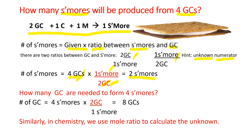How many graham crackers are needed to form four s'mores? The unknown is graham crackers, the given is four s'mores, times the conversion factor — unknown on numerator, given on denominator. Four times two divided by one gives you eight graham crackers. This makes sense: if two graham crackers produce one s'more, then eight graham crackers will produce four s'mores.